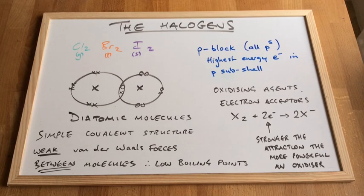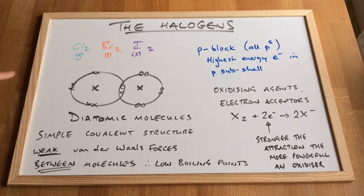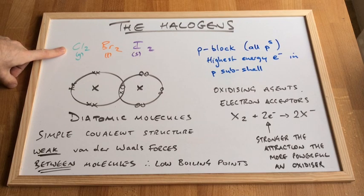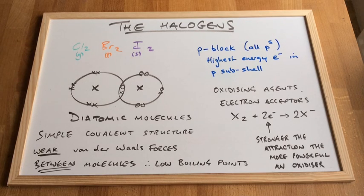In this video, I'm just going to do a quick introduction of the halogens. The halogens are group 7, and I've drawn up three of the members of the halogens group here. So we've got chlorine, Cl2, bromine, Br2, and iodine, I2.